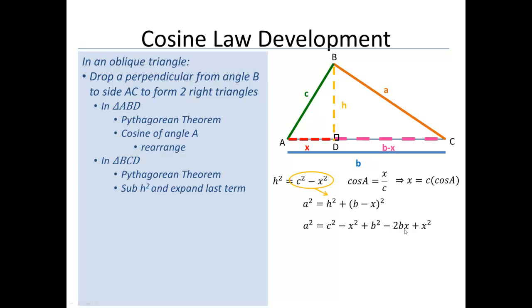We should notice that there's a negative X squared and a positive X squared. And of course, they're going to cancel out. So now I can rearrange this and just put it in order of letters. So my A squared is B squared plus C squared minus 2 times B times X.